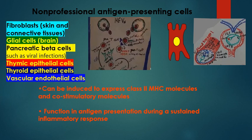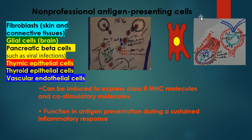Thymic epithelial cells are non-professional antigen presenting cells. In thyroiditis, thyroid cells and vascular endothelial cells can express MHC class I. Since all nucleated cells express MHC class I, they can act as non-professional antigen presenting cells under abnormal conditions — except red blood cells, which are non-nucleated. So nearly all body cells are nucleated and can act as non-professional antigen presenting cells.